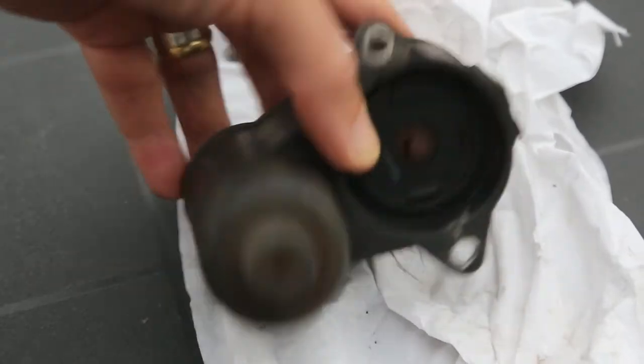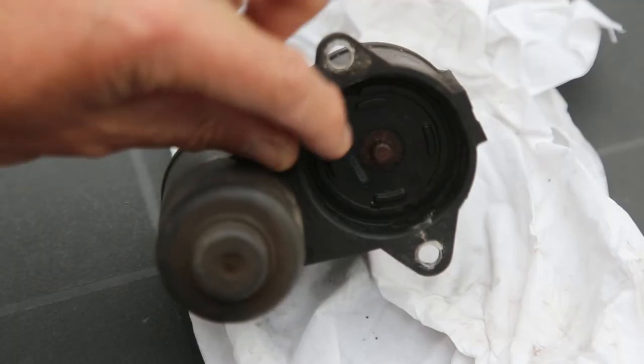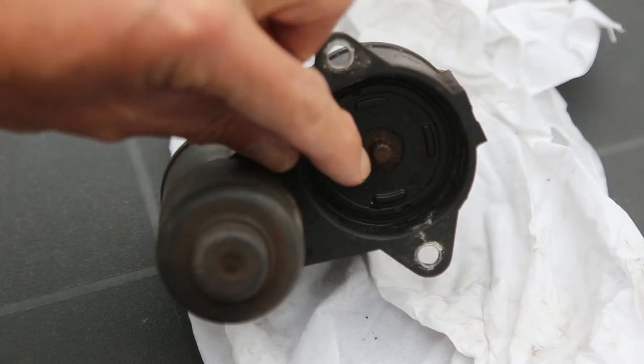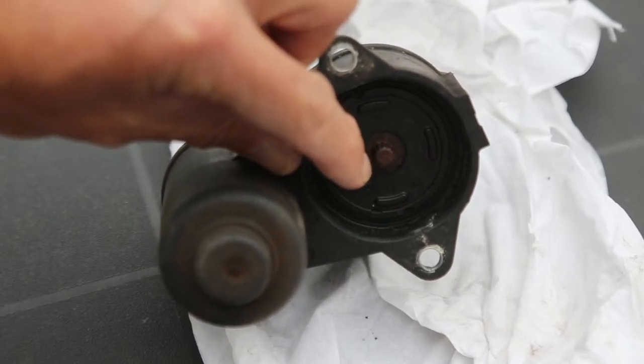You can see here the spline which is what actually turns the caliper to put the electric brake on and off.